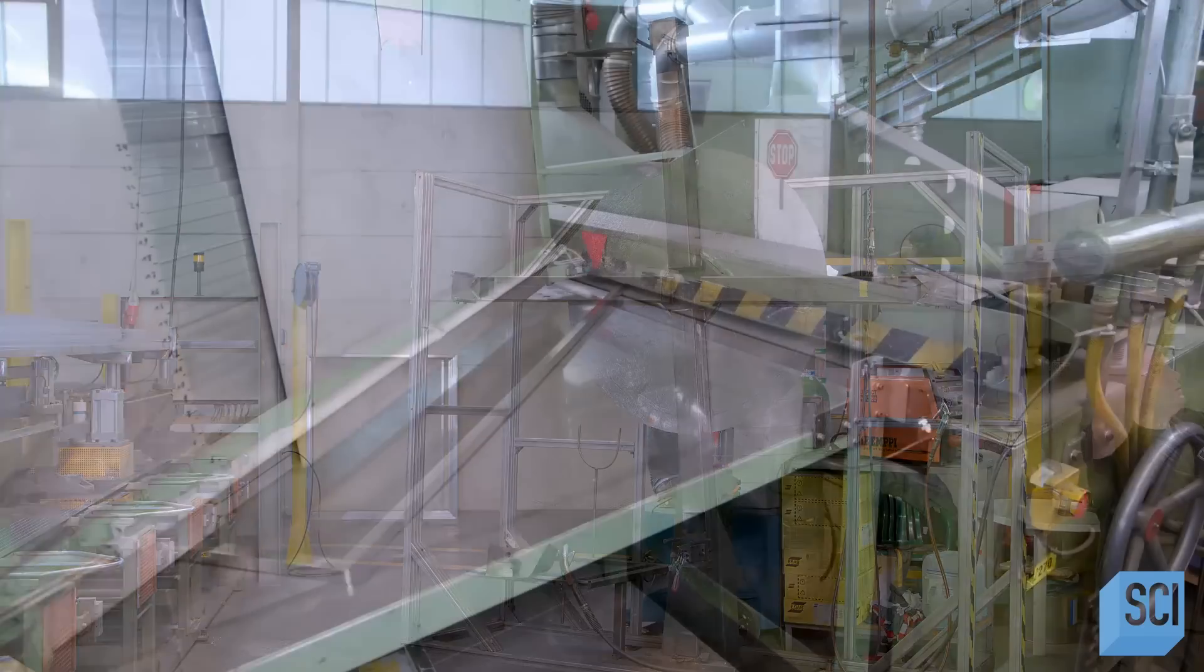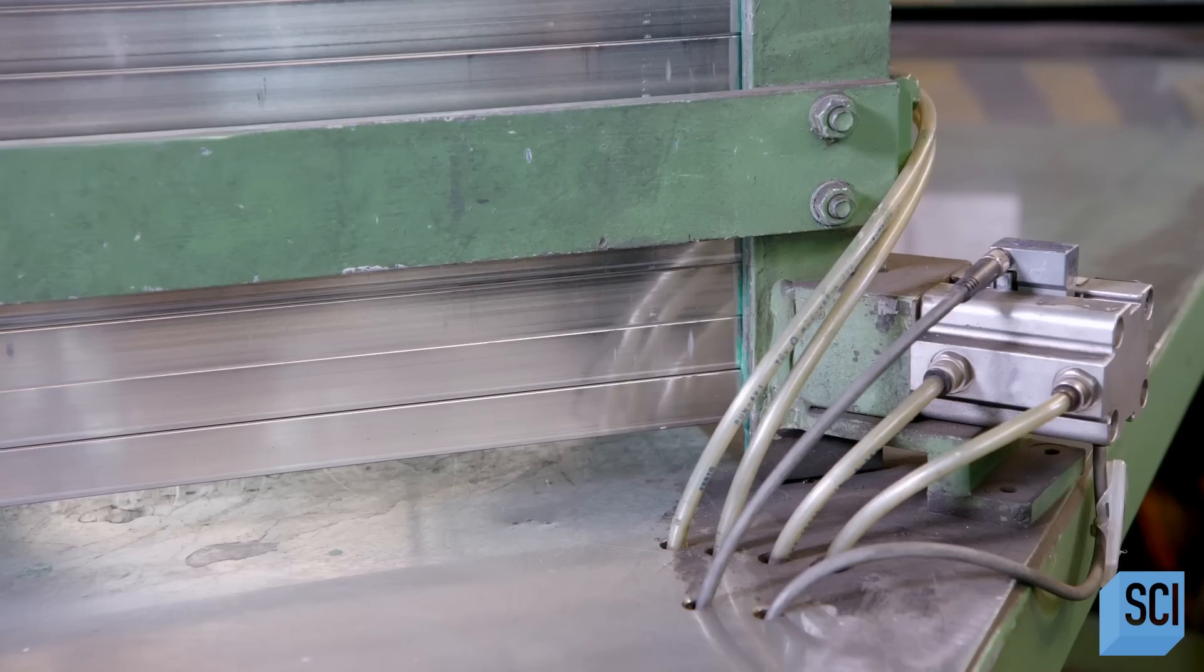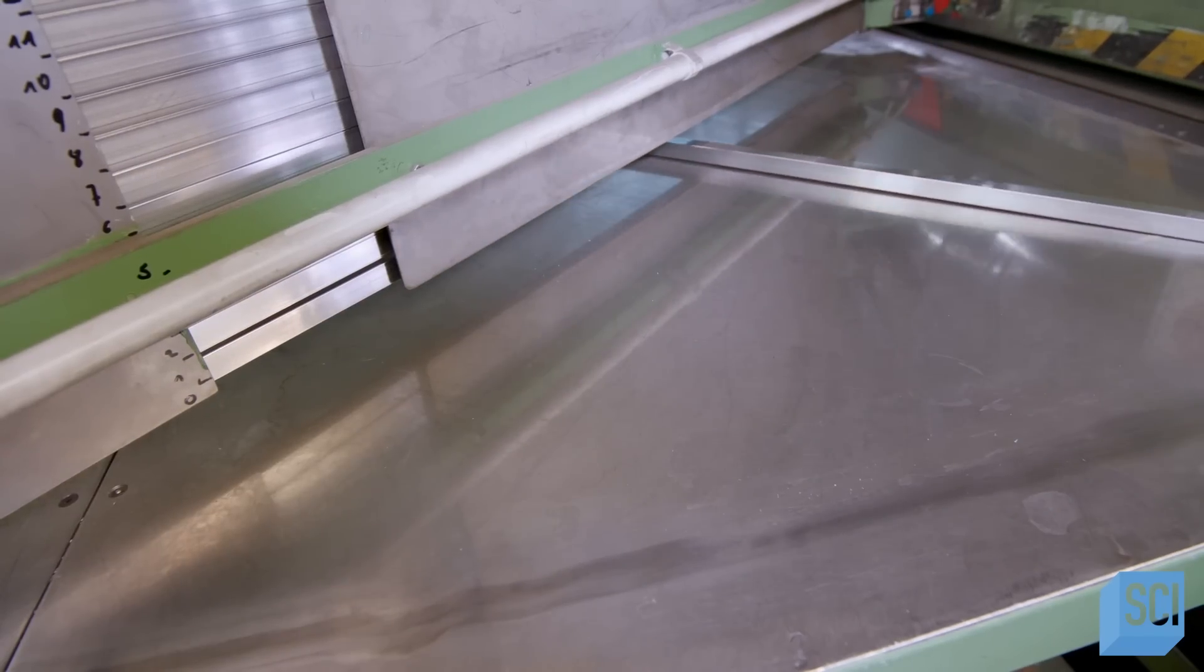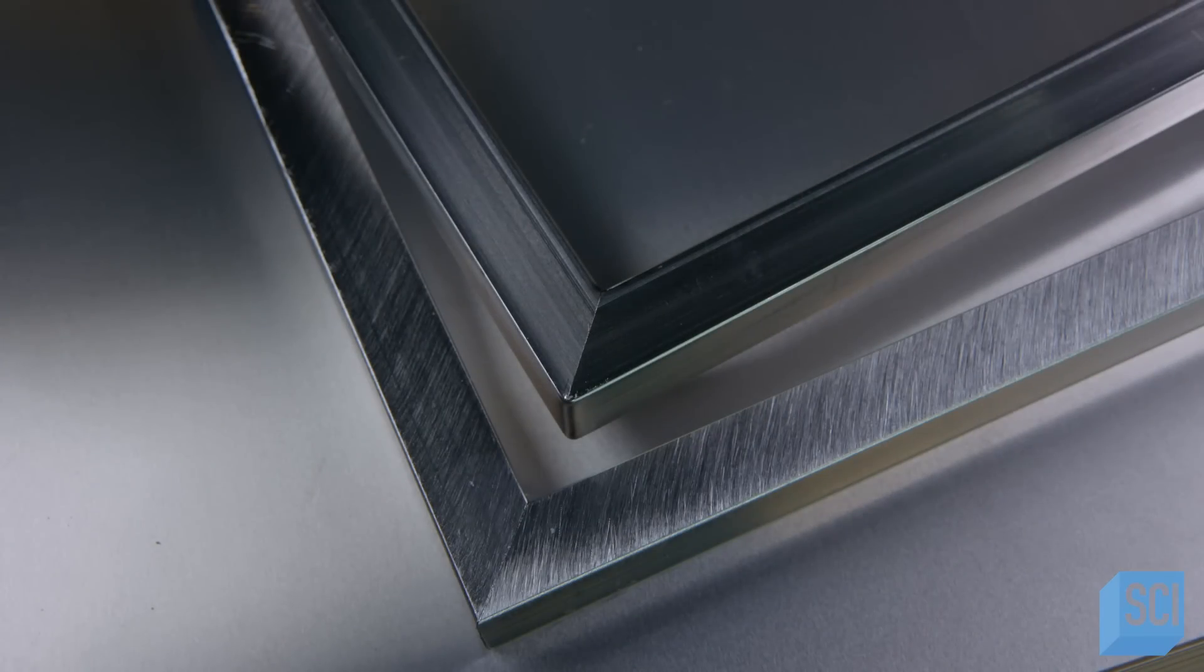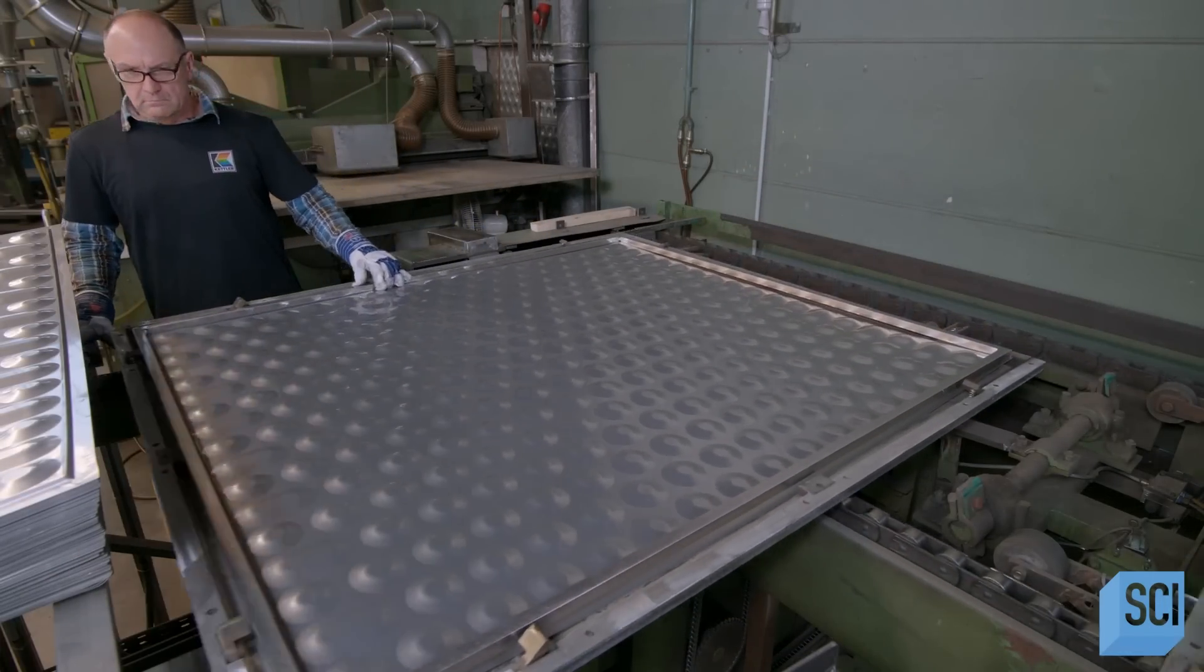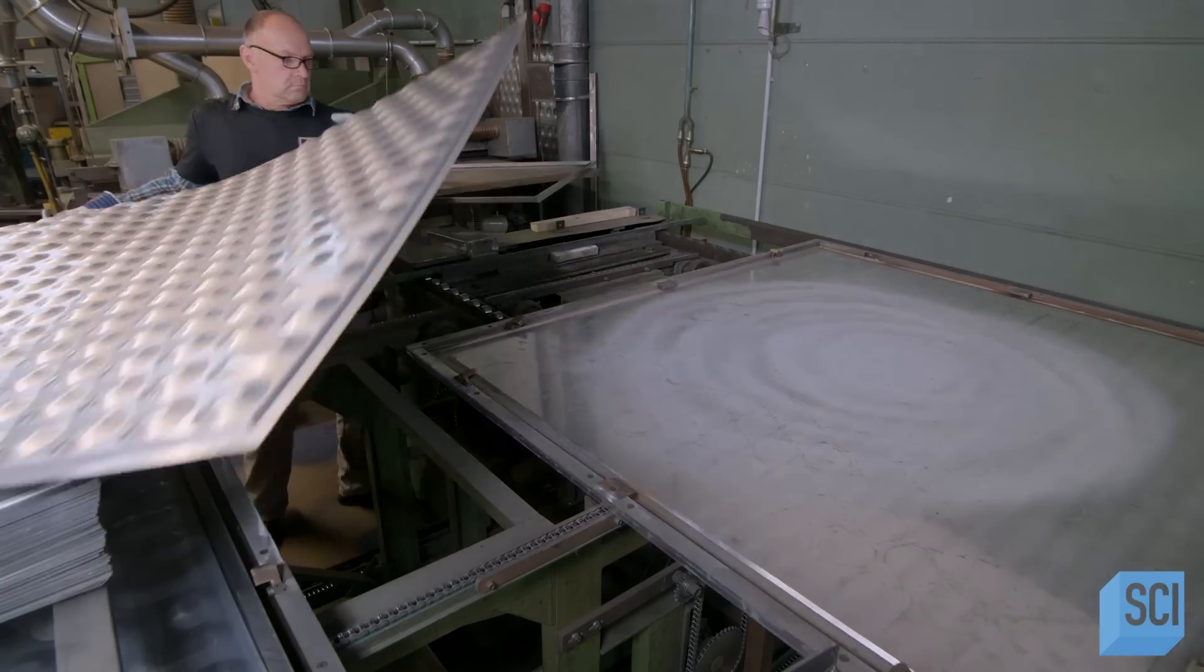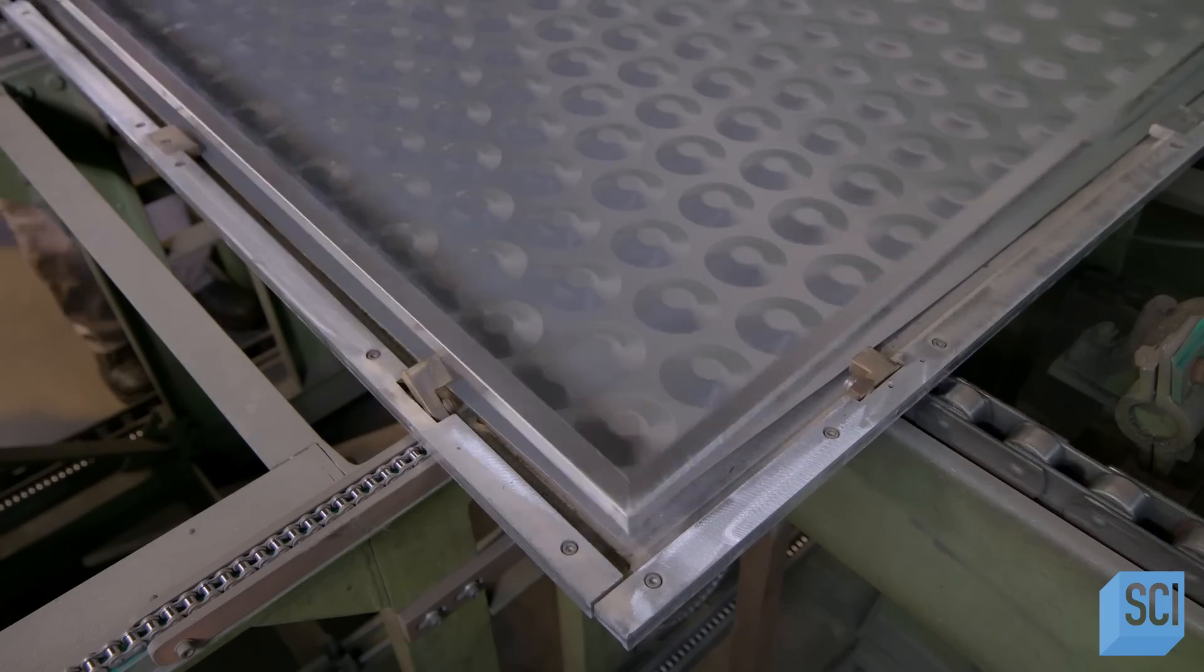The frames are inserted into a brushing machine. Inside, wire brush rollers allow the aluminum surface to become rough. This helps the components to adhere to one another. Another technician places the embossed aluminum sheet into a rectangular assembly jig and adds the brushed aluminum frame.